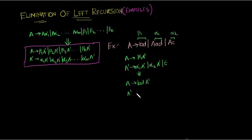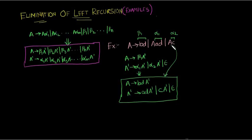That is A gives bd A prime. A prime A prime gives alpha 1, no we have to substitute the alpha 1. We substitute the alpha 1 here that is ad A prime A prime, and alpha 2 that is c A prime and epsilon. So this is a grammar without any left recursion. This is equivalent to this without left recursion.